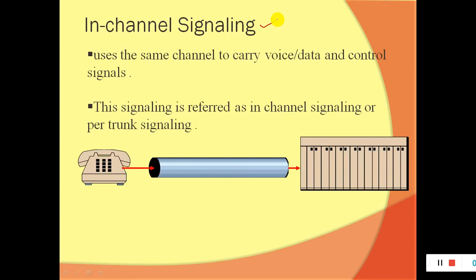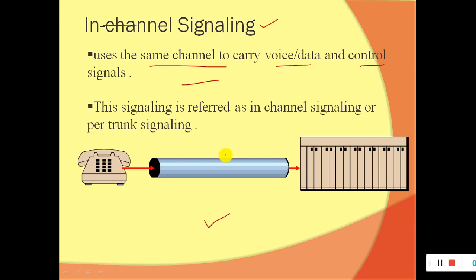What is the meaning of in-channel signaling? It uses the same channel — the channel in which we transmit data is also used to carry voice data and control signals. So in-channel signaling is very simple: we use the same channel which is used for voice and data, and we include the control part into that signaling. This is referred to as in-channel signaling or per-trunk signaling, because a channel carries both the control signal as well as voice or data.